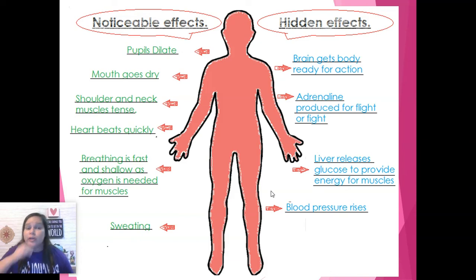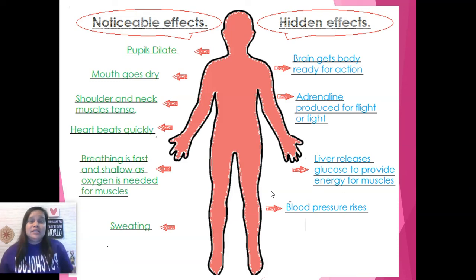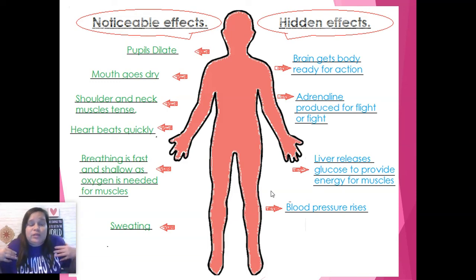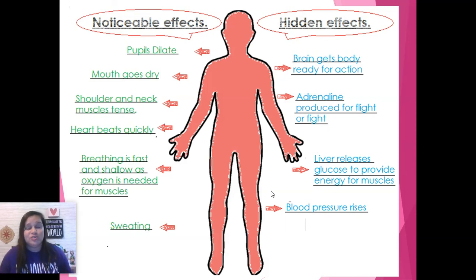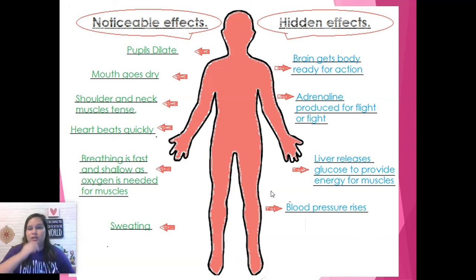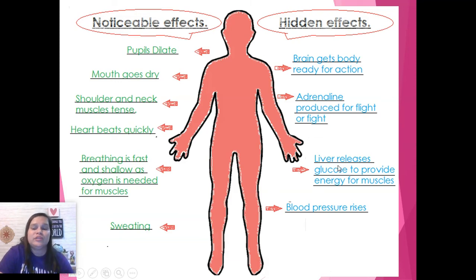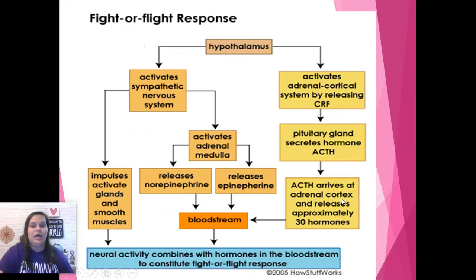Some of the effects of the fight or flight response are noticeable: pupils dilate, mouth goes dry, shoulder and neck muscles tense. When we're under prolonged stress throughout the day, we don't realize we're holding our muscles and shoulders up high, and at the end of the day we're sore — because we've been in fight or flight mode. Heartbeat is quick, breathing is fast, and we're sweating. Underneath the surface, your brain is getting everything ready for action: you're producing adrenaline, your liver is producing glucose, and your blood pressure is up.